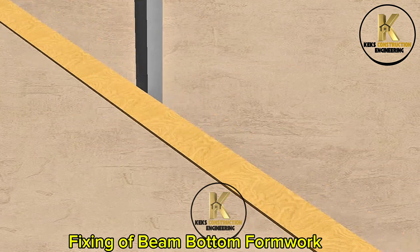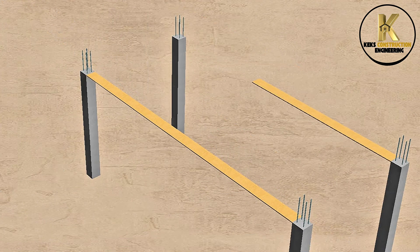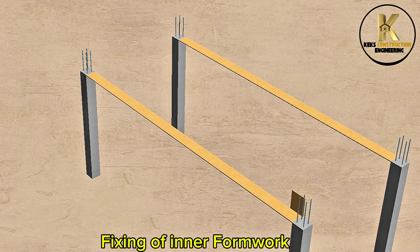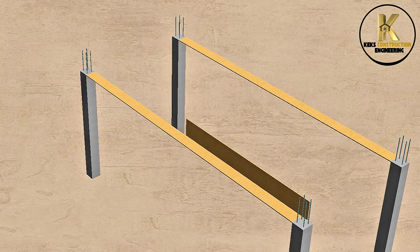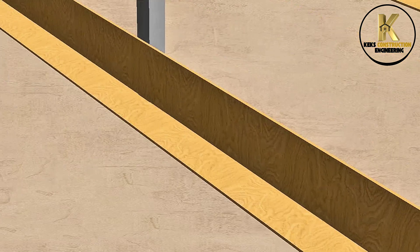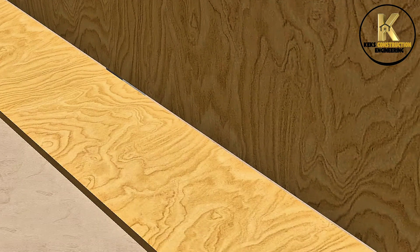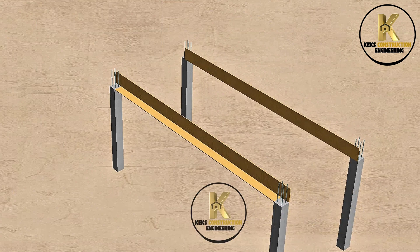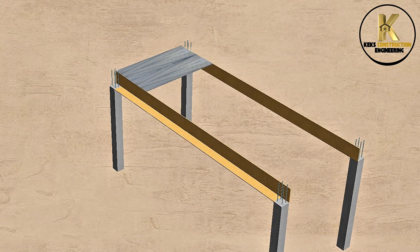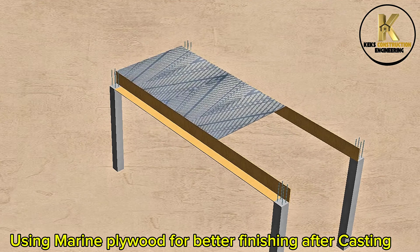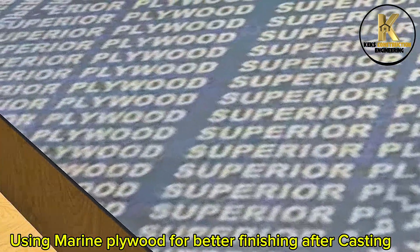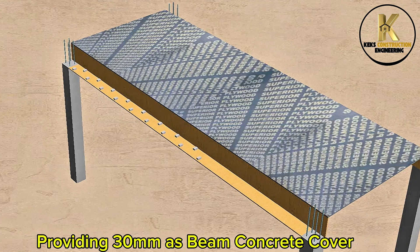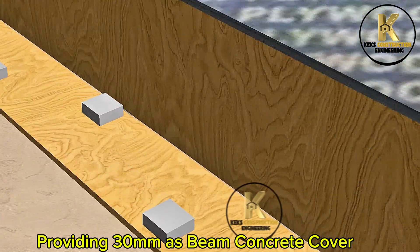Formwork construction begins with the fixing of beam bottom formwork, followed by fixing of inner formwork. Marine plywood is used for better finishing after casting. A 30 mm beam concrete cover is provided.